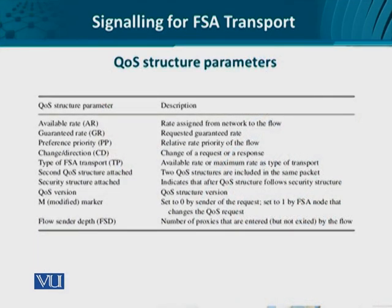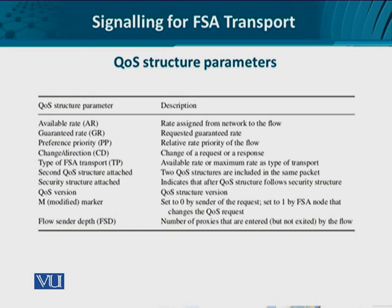The QS structure exchanged between endpoints and the FSA-aware network includes: the available rate, which is the rate assigned by the network to the flow — whatever the user requests, the user receives what the network can offer; the guaranteed rate, which is the minimum rate the service requester expects — it is the lower bound, and if not provided, flow state aware QS provisioning may not happen at all; and the preference priority, which is the priority of a flow within flows belonging to the same flow aggregate. There is also the change or direction field, which is a request-response mechanism to share information between network elements and endpoints.